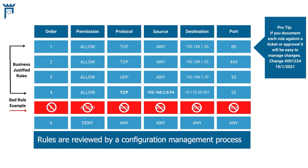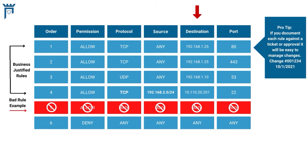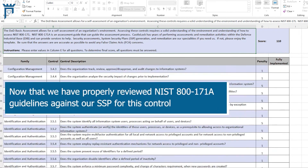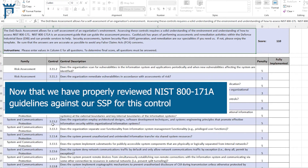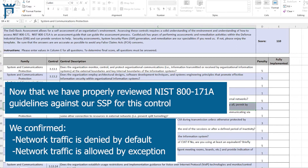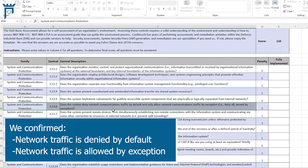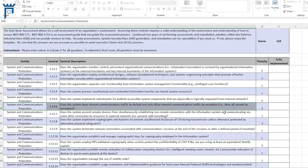Those rules are reviewed through a configuration management process and approved. We're making the rules as narrow as possible, capturing the source, destination, and the ports and protocols necessary to facilitate that traffic. So we would be in pretty good shape for this control. Network traffic is denied by default — confirmed by looking at our firewalls. Network traffic is allowed by exception — we've covered that. So we have both assessment objectives met.